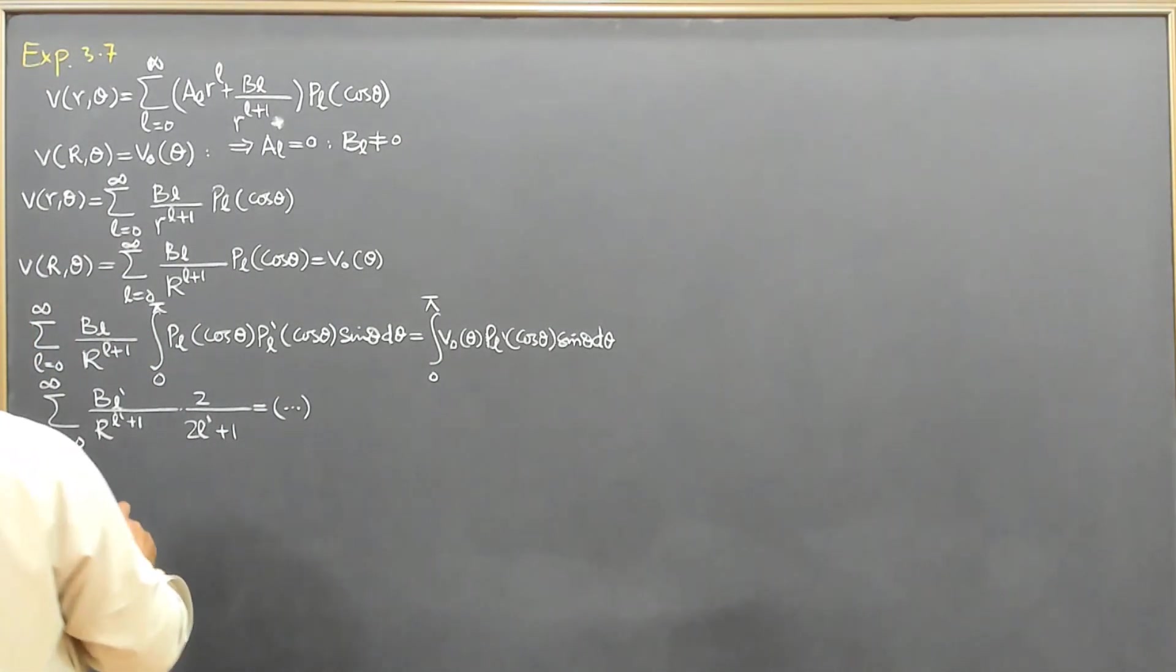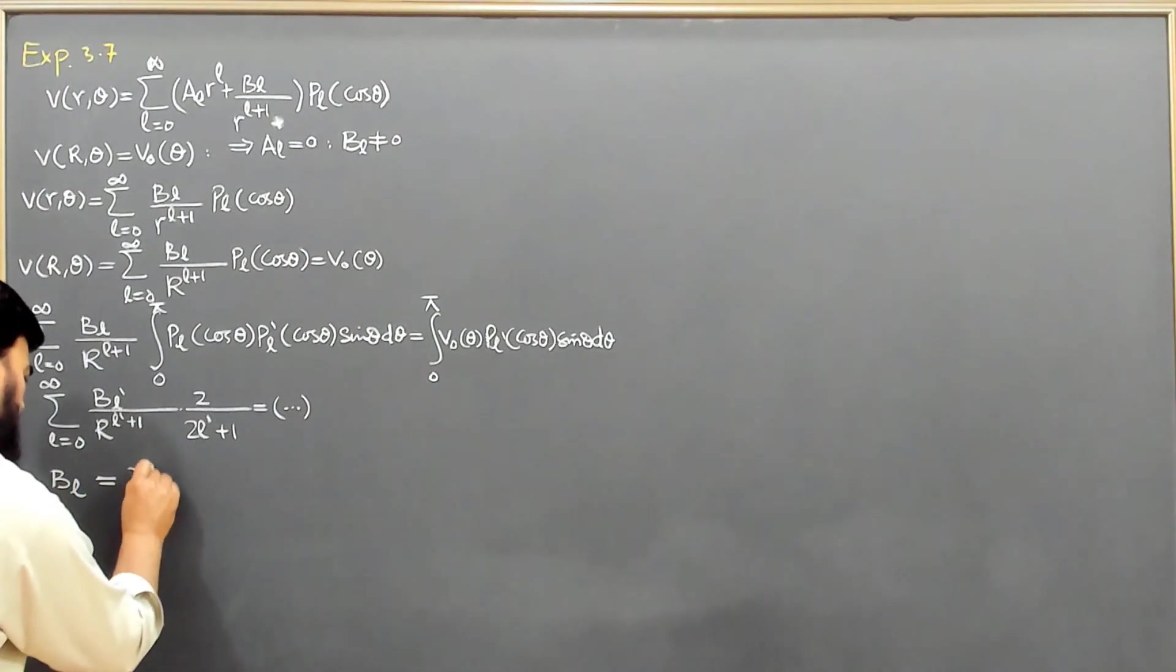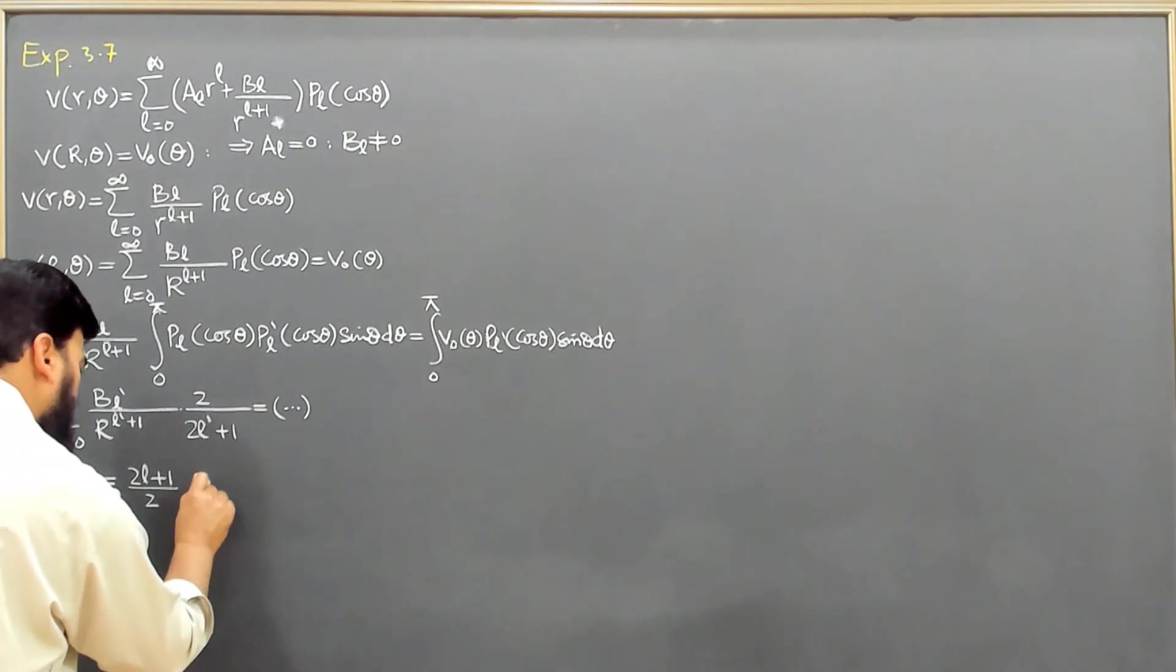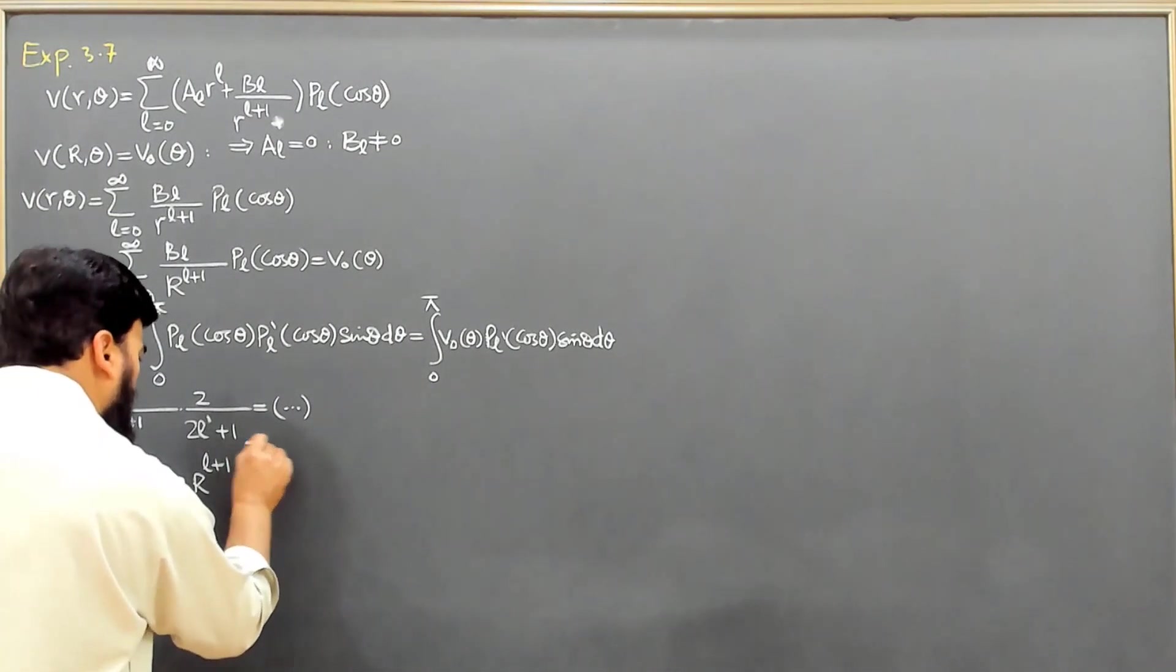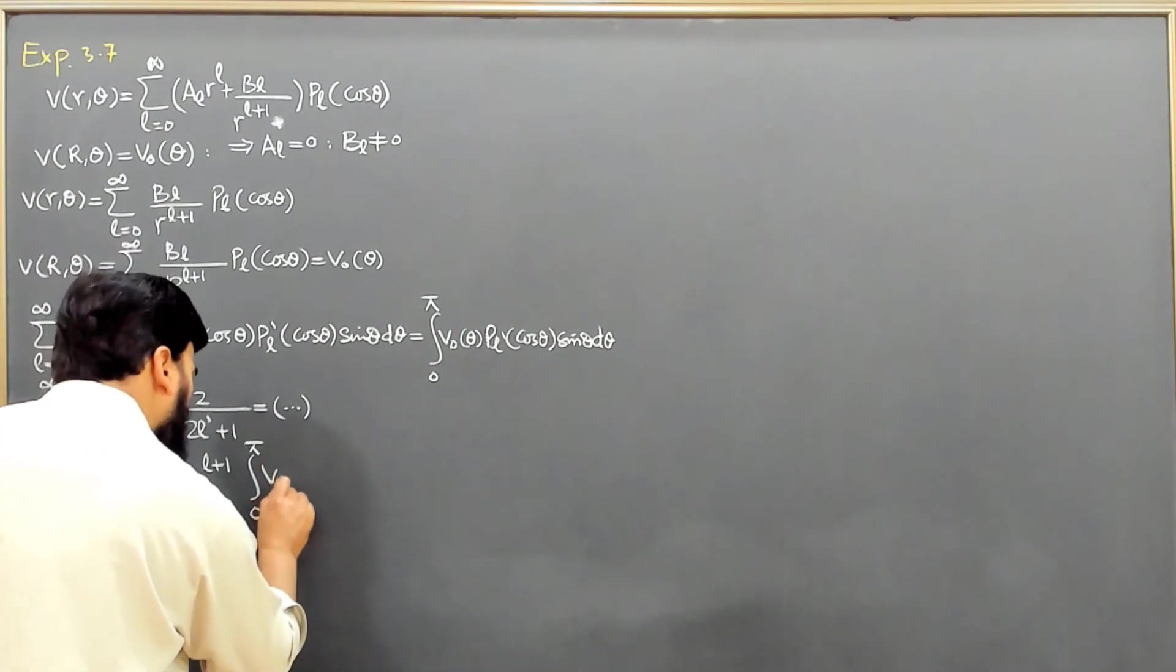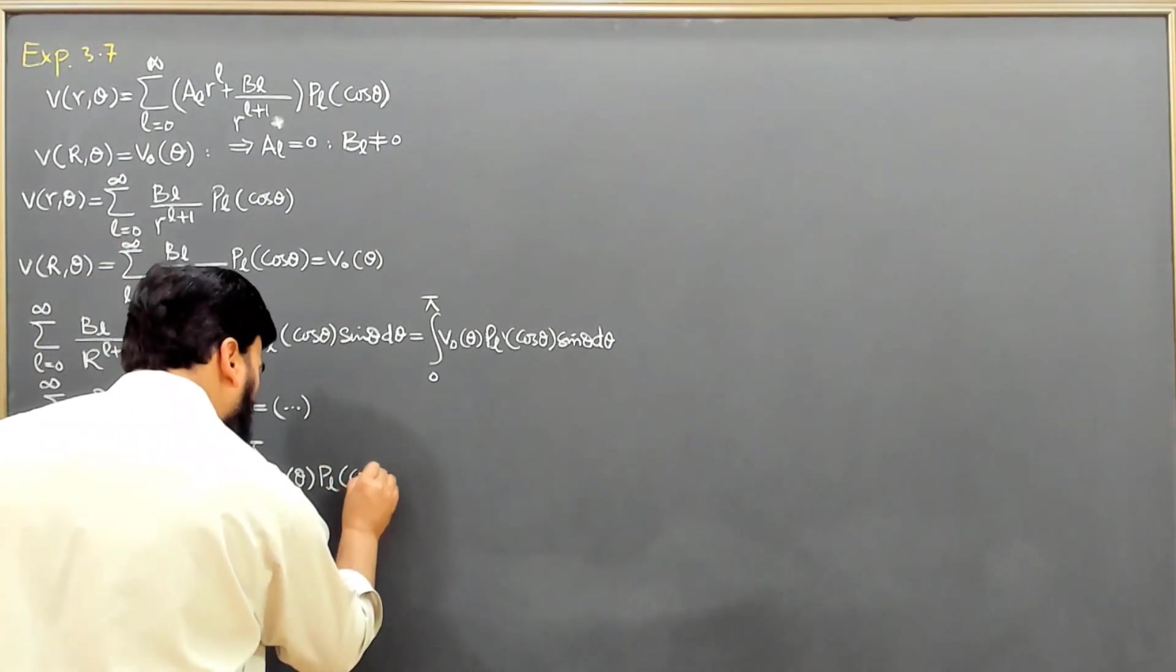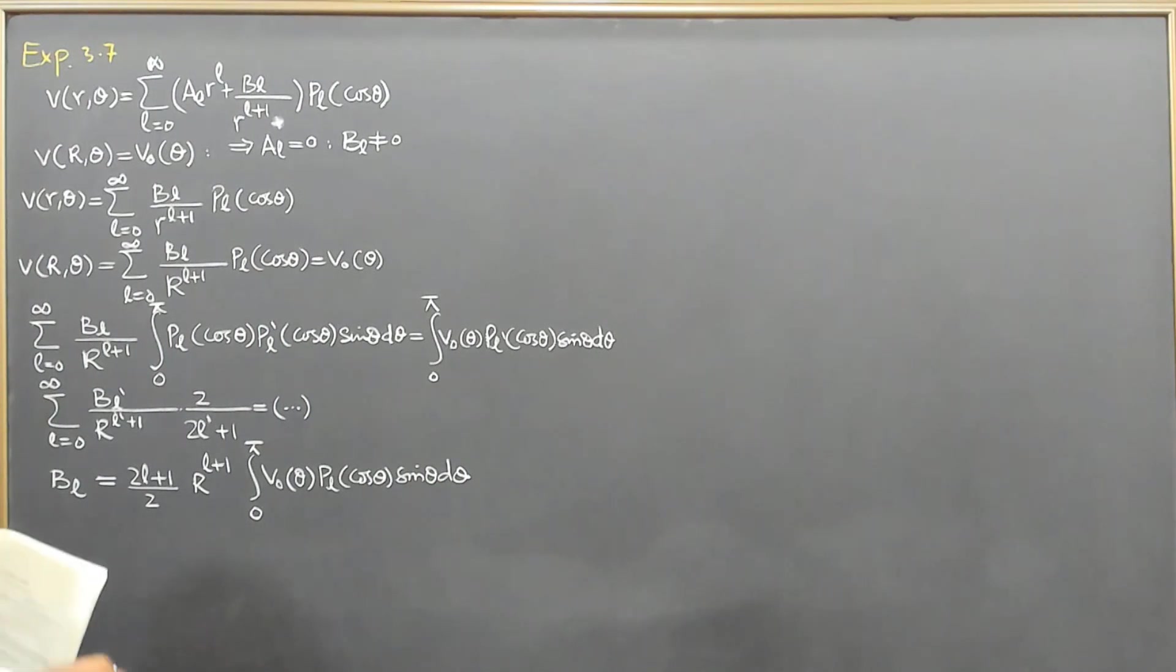So the BL value finally will come out, since L equals L', as (2L+1)/2 times R^(L+1) times the integral from 0 to π of V₀(θ)·PL(cos θ)·sin θ dθ. And as we have determined BL, this is the solution.